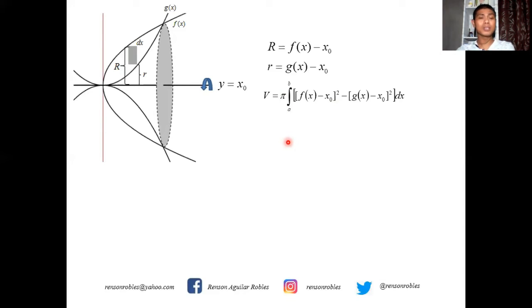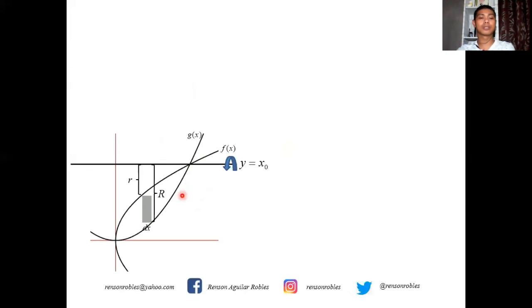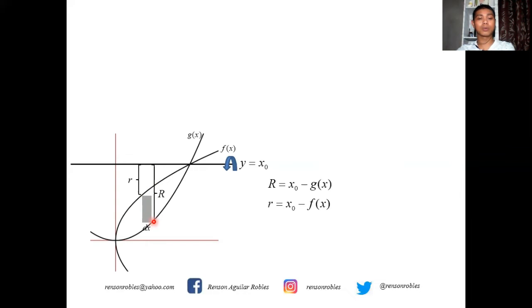Another case is when the axis of revolution is found above the region. In this case, small r is the distance from the axis of revolution to the nearest part of the region: r = x₀ − f(x), and capital R = x₀ − g(x), so the volume formula is written accordingly.